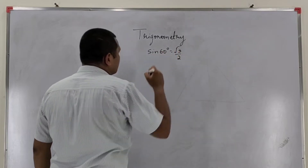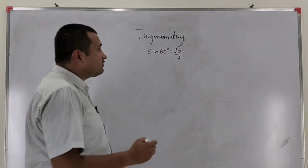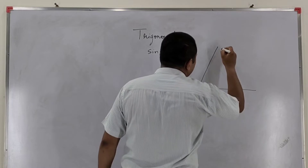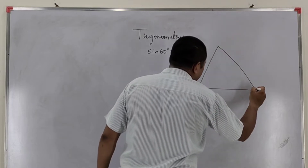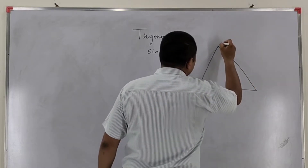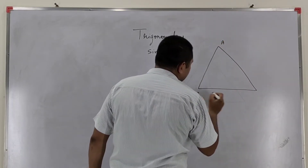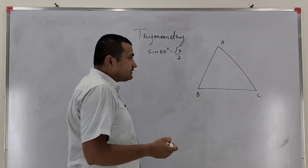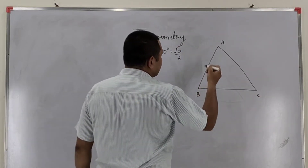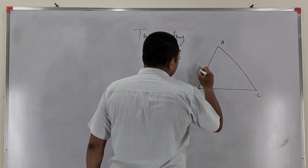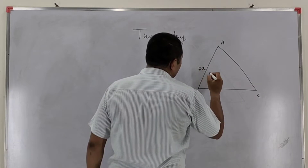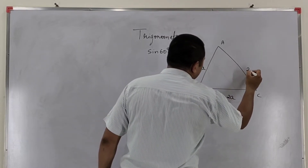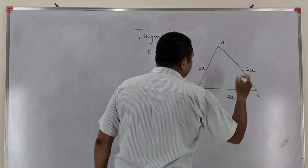I am taking one equilateral triangle. This equilateral triangle is named ABC, and as we know that in an equilateral triangle all three sides are of equal length. So here I am considering each side has length 2A. So length of AB is 2A, length of BC is also 2A, and length of AC is also 2A.